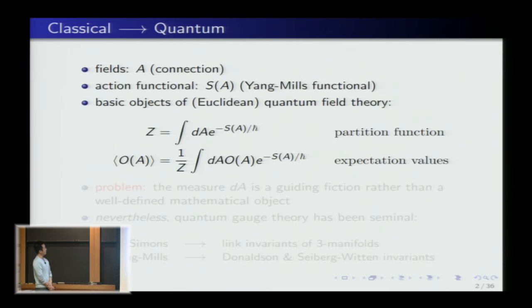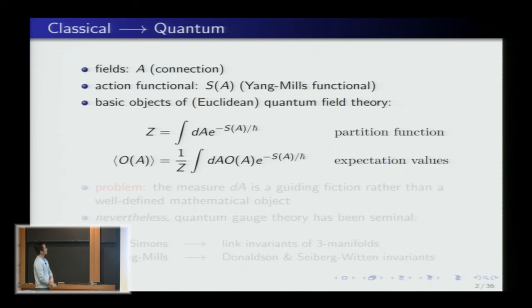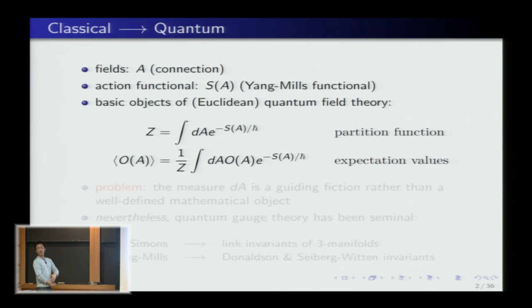When we go to quantum physics, if we're doing Euclidean quantum field theory, instead of precise measurements we take an expectation. Things are statistical. One has a partition function in which one integrates — formally for now — over the space of all fields, weighted by e^{-S/ℏ}, where ℏ is Planck's constant, the quantum parameter. Classical physics is the limit as ℏ goes to zero: the exponential localizes onto the minima of the action, recovering the Euler-Lagrange equations.